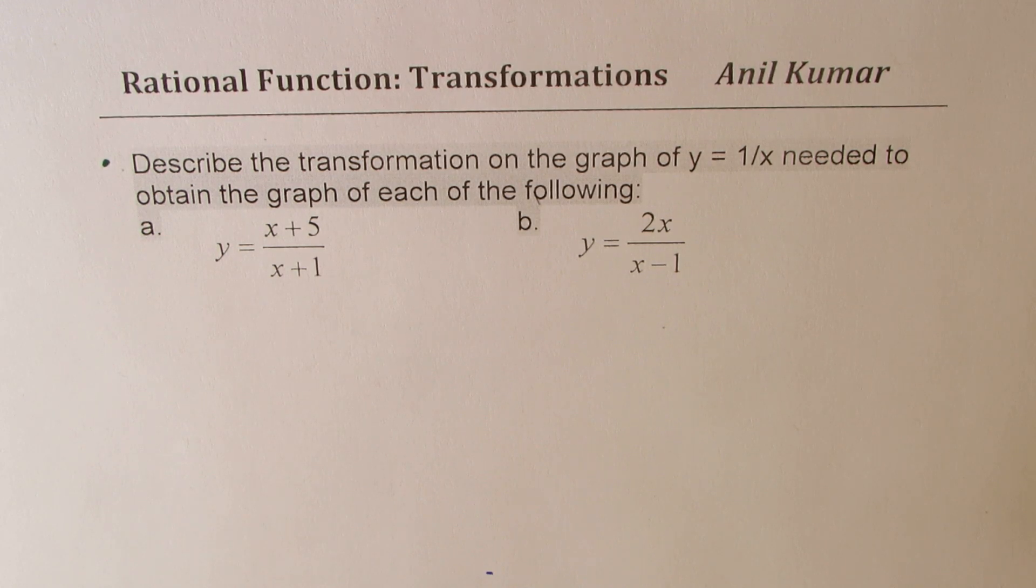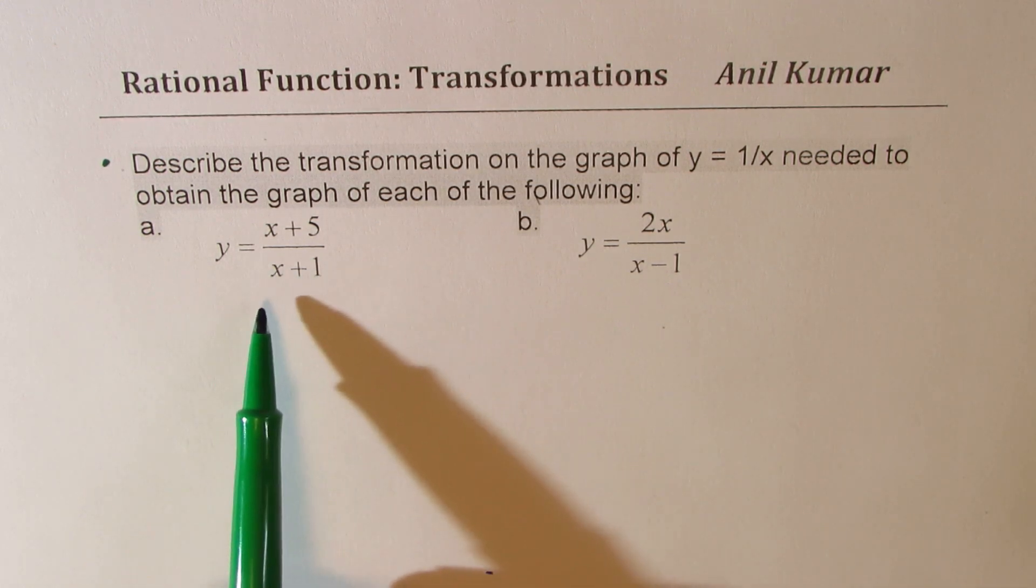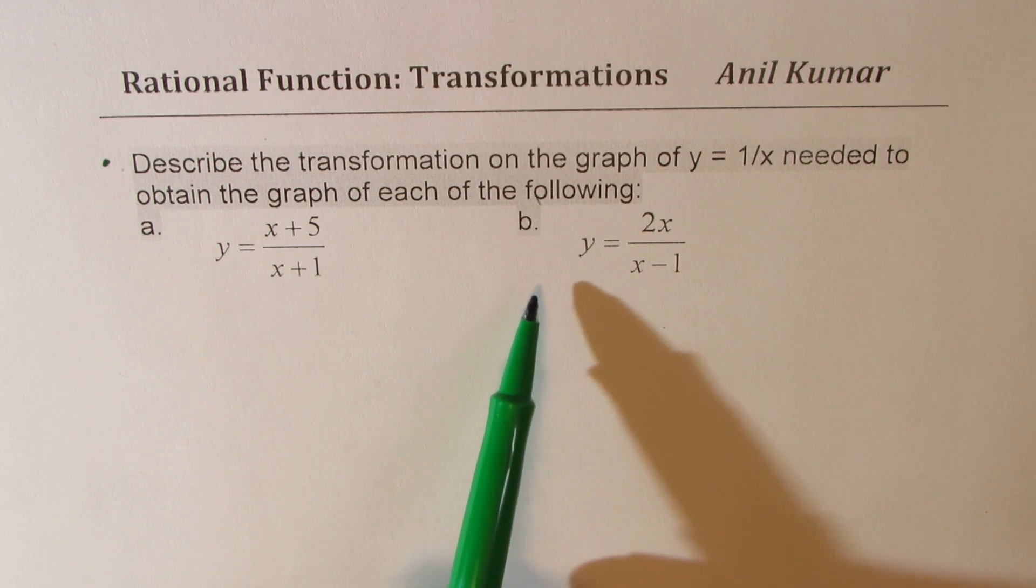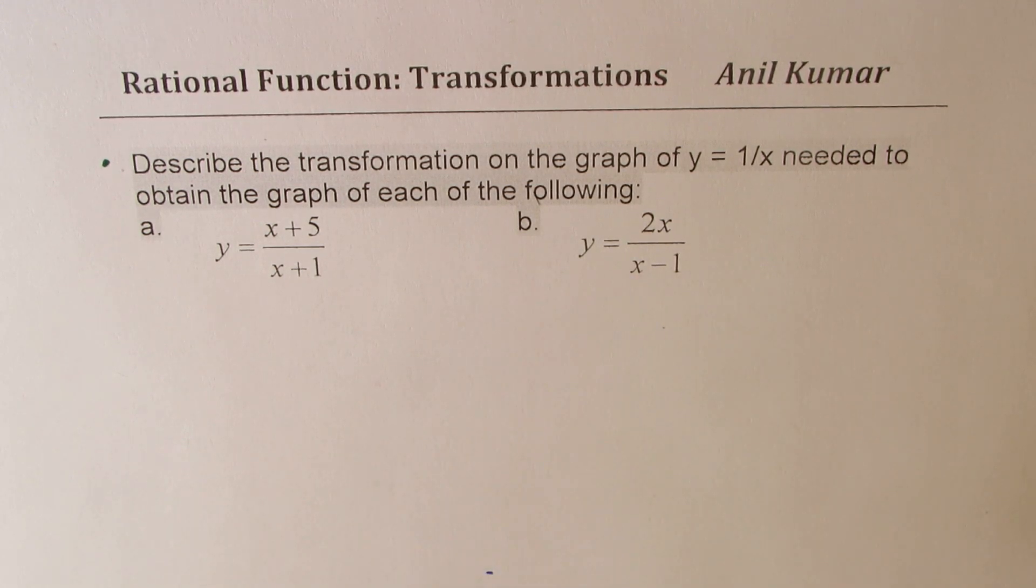The question here is, describe the transformation on the graph of y equals 1 over x needed to obtain the graph of each of the following: a. y equals x plus 5 over x plus 1 and b. y equals 2x divided by x minus 1.